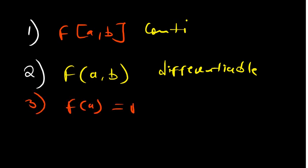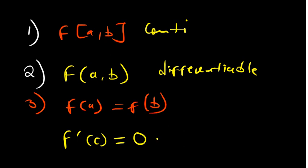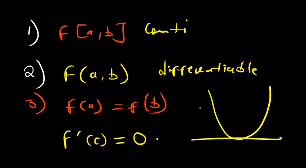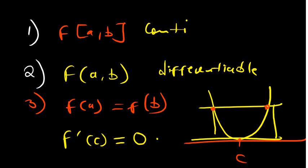If all these conditions are met, Rolle's Theorem tells us there should be a point c where the derivative of that function equals zero. As shown in the quadratic example, if there are two points a and b where the function values are equivalent, there should be a point c where the derivative equals zero. That's what Rolle's Theorem is about. Thank you for watching, subscribe for more videos.